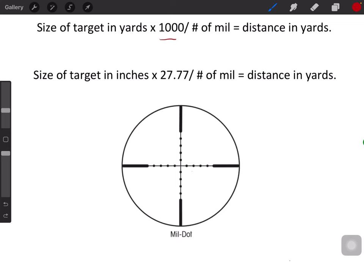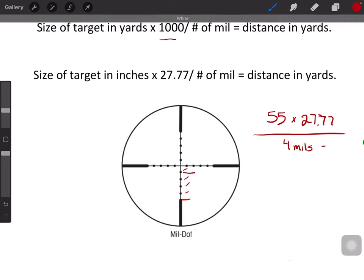So your target is 55 inches tall. You are going to times that by 27.77 and then divide it by the number of mils. Let's say from the hoof to the shoulder your target takes up one, two, three, four mils, and that will give you a distance of 381 yards.